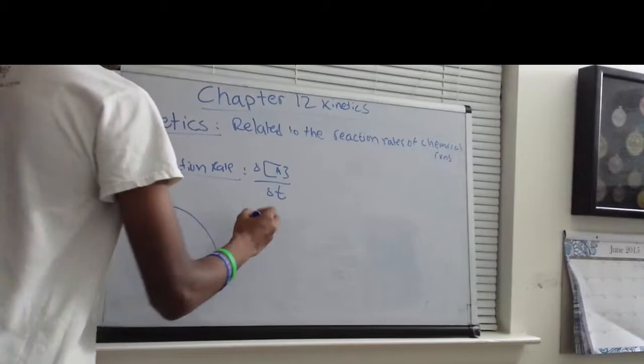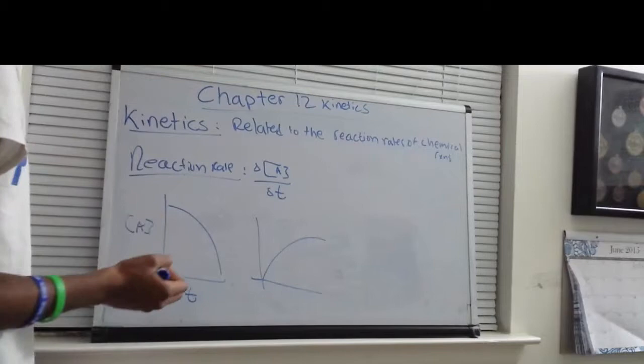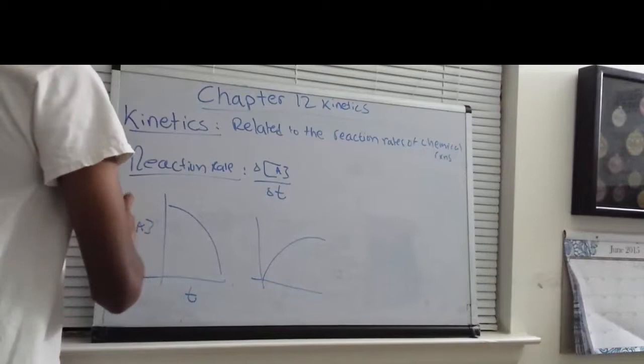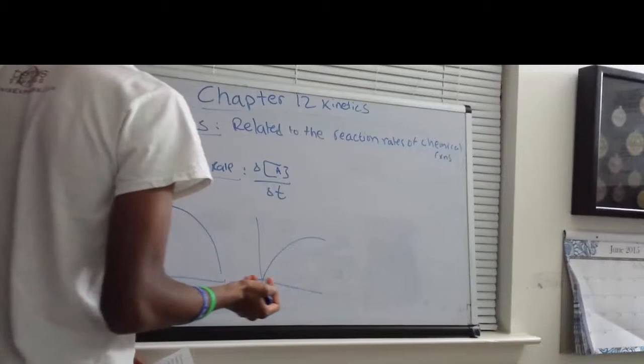But if it was a product, the graph would look something like this. In the AP Chem curriculum, we will only be looking at the forward reaction. Hence, the reaction rate for a reactant will always be negative, and we will only be considering the change in concentration of the reactant. We won't be considering the product's concentration, or else that would make calculations a lot harder.